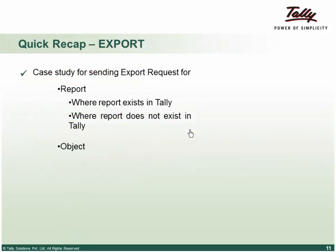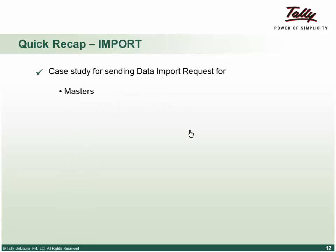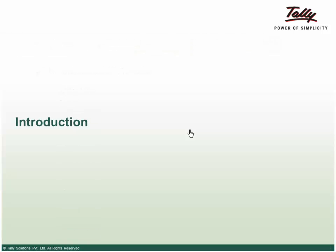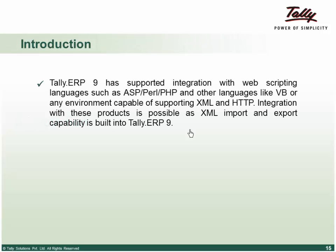We also discussed how to export an object, a collection, and a function, then covered import requests — how to import masters and vouchers, and the importance of the XML tag for masters and vouchers. Now we begin Part 2.